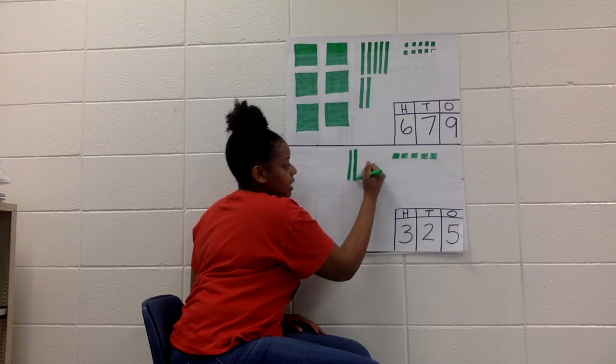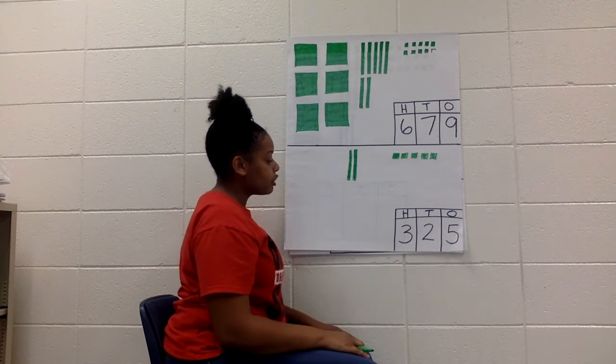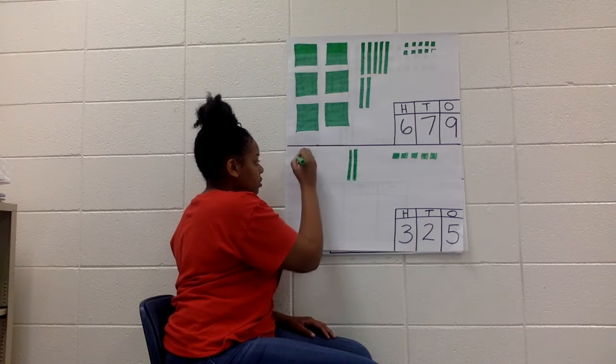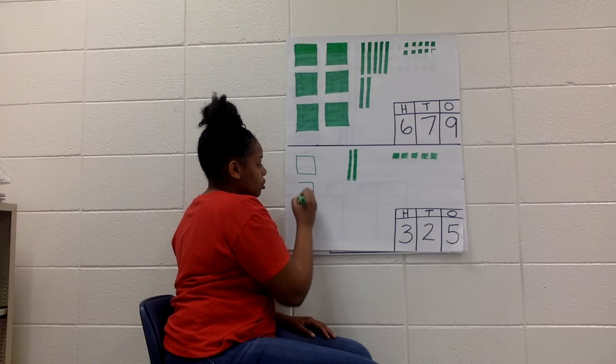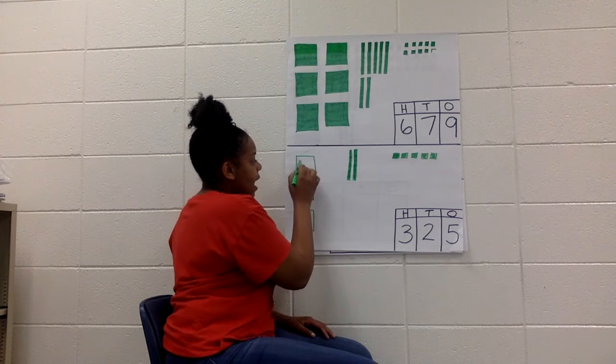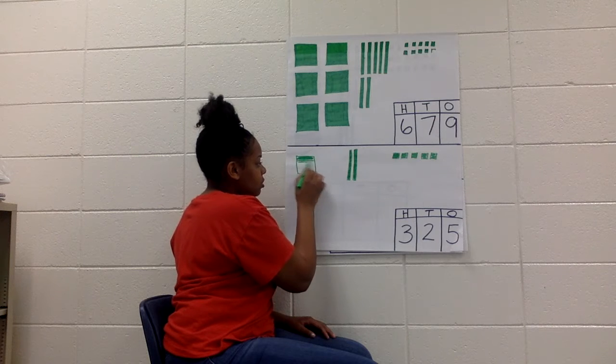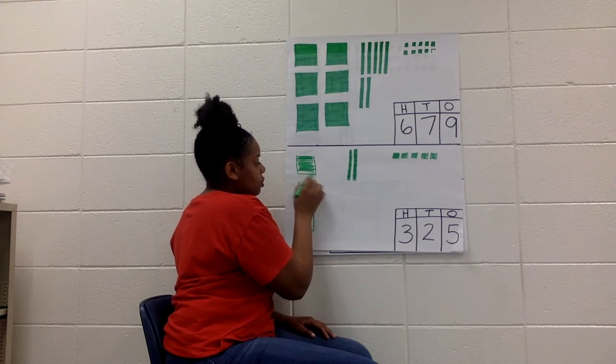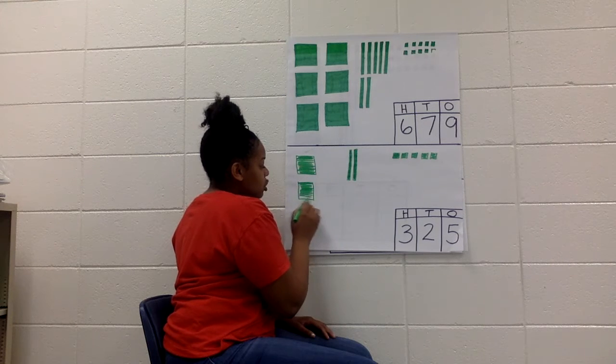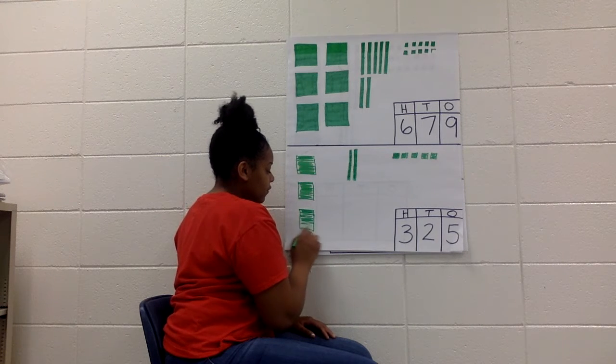And last but not least, I have my hundreds. How many hundreds do I have? Three. So that means I'm drawing three squares. 1, 2, 3. I have three hundreds, two tens, which represents 20, and five ones. So my number is 325.